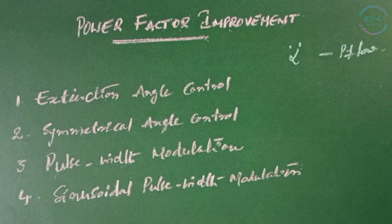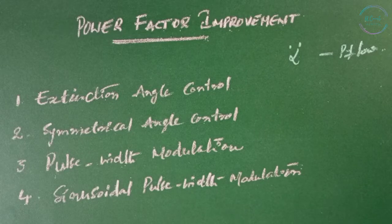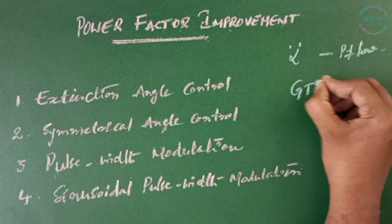These converters generate harmonics into the supply. Forced computation can improve the input power factor and reduce the harmonic levels, and this forced computation can be achieved by using GTOs.